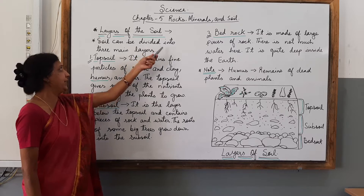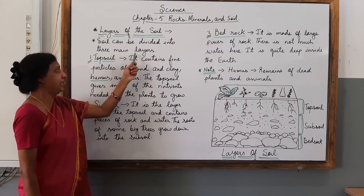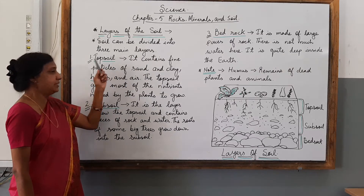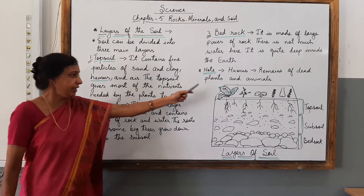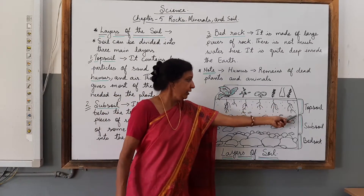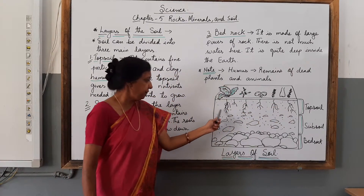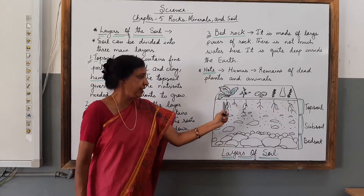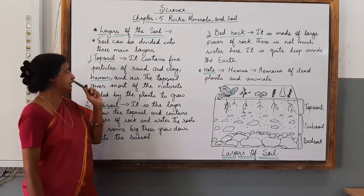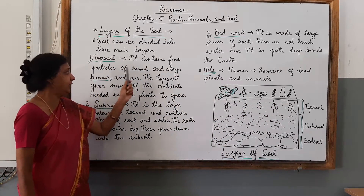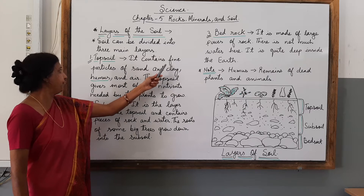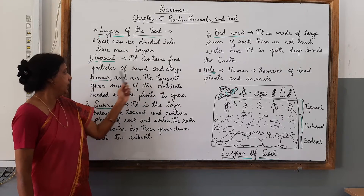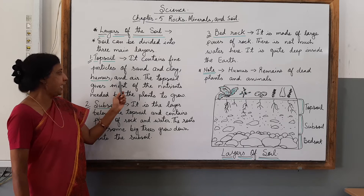Soil can be divided into three main layers. The first layer is called topsoil. Here you can see the topsoil in the diagram. It contains fine particles of sand and clay, humus and air.